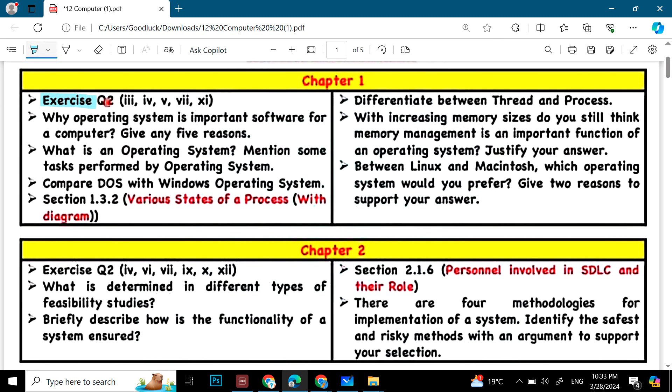Exercise question number 2, part 3, 4, 5, 7 and 11. Then why operating system is important software for a computer, give any 5 reasons. What is an operating system? Mention some tasks performed by operating system. Compare DOS with window operating system.